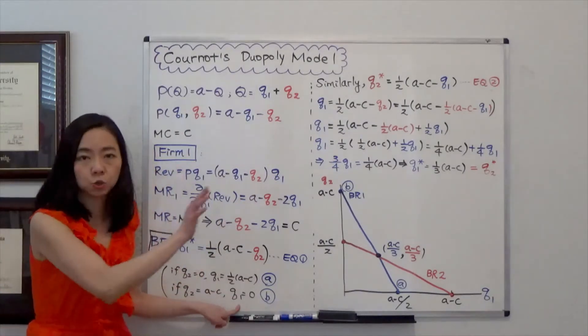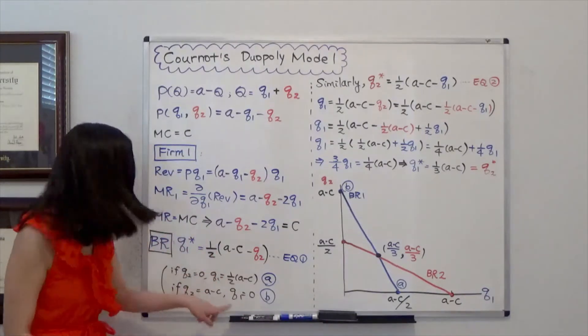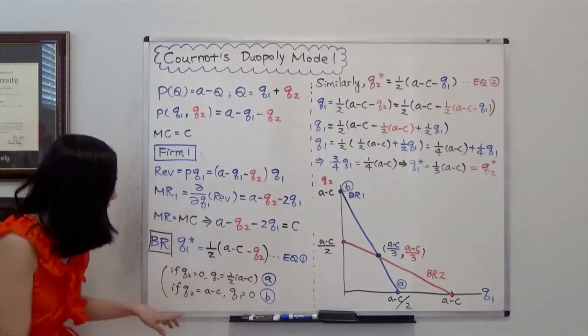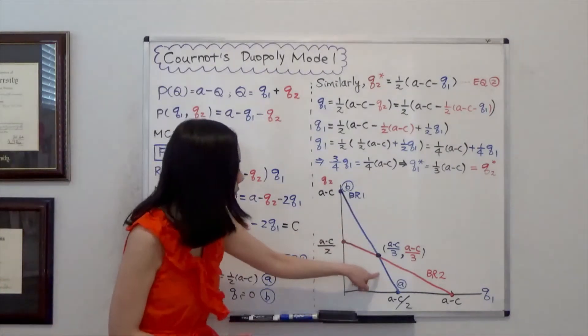That means hey firm 2 you're producing too much. That's crazy. And that's hurting my profit so I'm not going to produce anything. And with these two points we can draw the best response curve for firm 1.